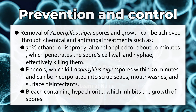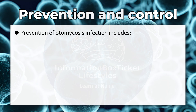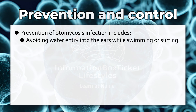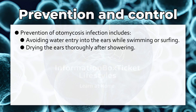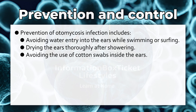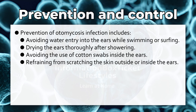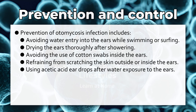Bleach containing hypochlorite inhibits the growth of spores. Prevention of otomycosis infection includes avoiding water entry into the ears while swimming or surfing, drying the ears thoroughly after showering, avoiding the use of cotton swabs inside the ears, refraining from scratching the skin outside or inside the ears, and using acetic acid eardrops after water exposure.